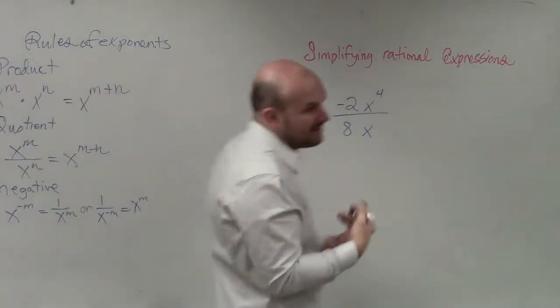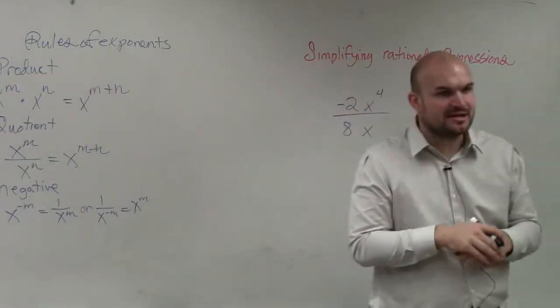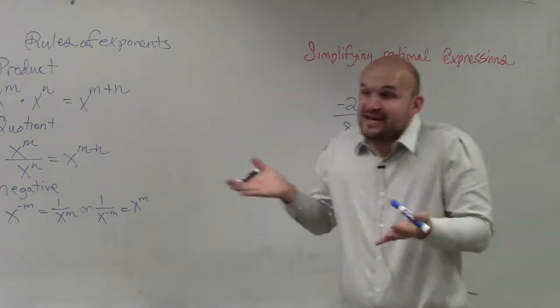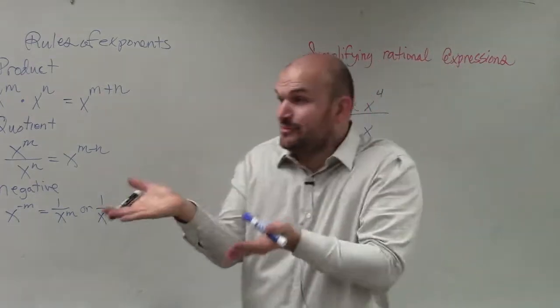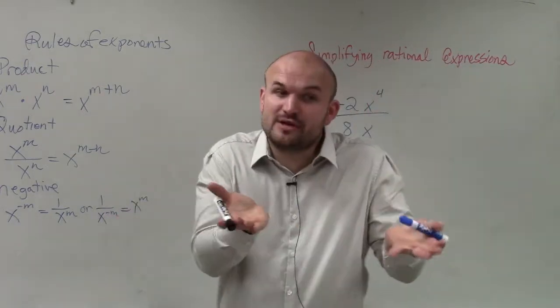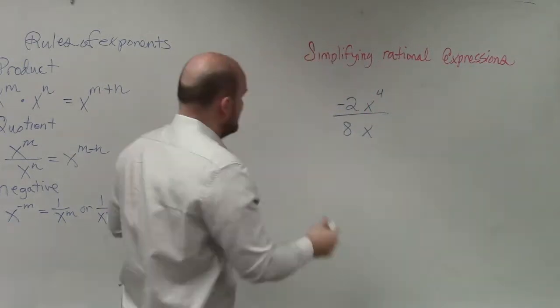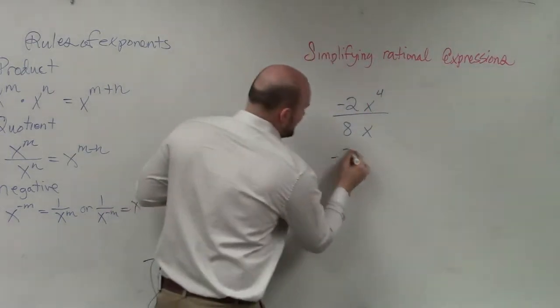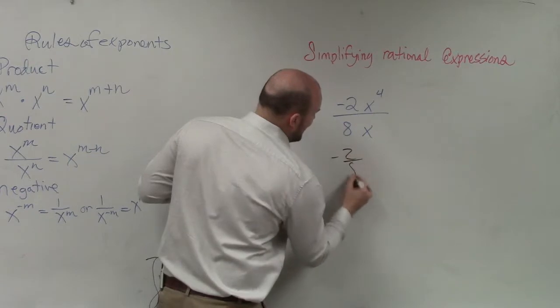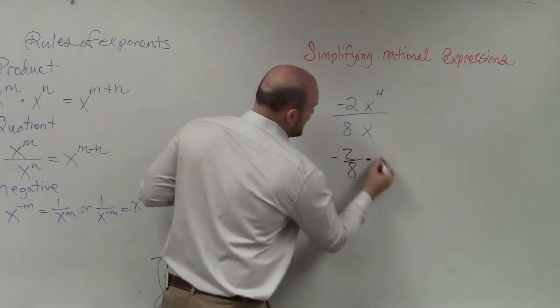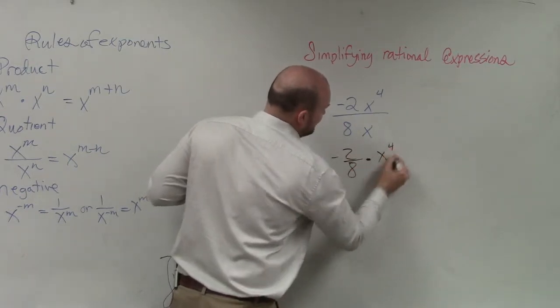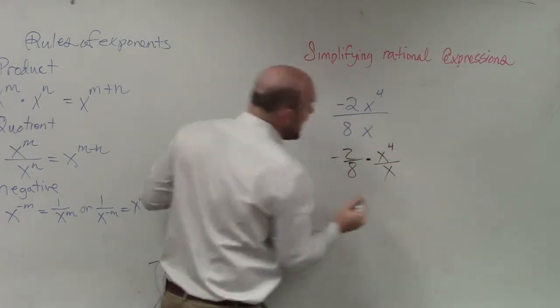Ladies and gentlemen, the main important thing when simplifying rational expressions is I would definitely look at this as two different problems: simplifying negative 2/8 times x to the fourth divided by x.